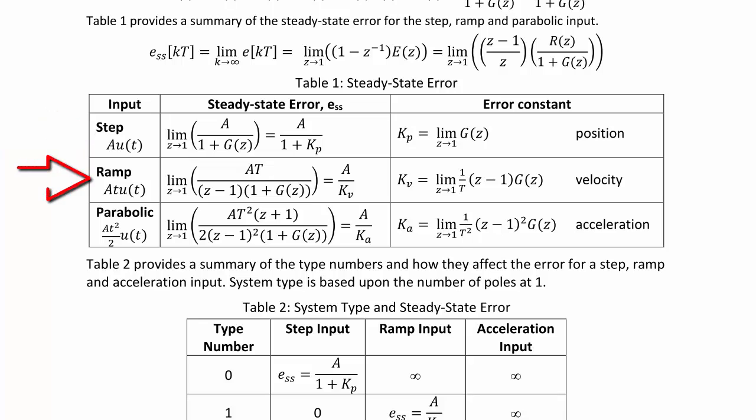For the ramp A·t·U(t), the steady state error is the limit as Z approaches 1 of A·T over (Z minus 1) over 1 plus G(Z), which equals A over KV, where KV is the velocity error constant — the limit as Z goes to 1 of (1/T)(Z minus 1)G(Z).